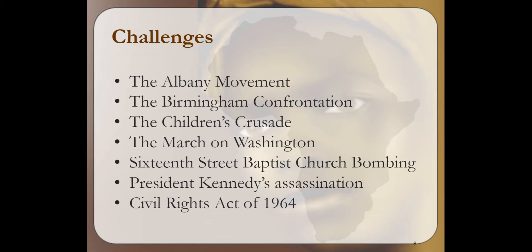The Birmingham confrontation lost momentum as well, but caught the attention of the federal government due to the Children's Crusade. After the march on Washington, the bombing of the 16th Street Baptist Church, and President Kennedy's assassination, his successor Lyndon B. Johnson signed the Civil Rights Act of 1964, which was a federal law banning discrimination in places of public accommodation.